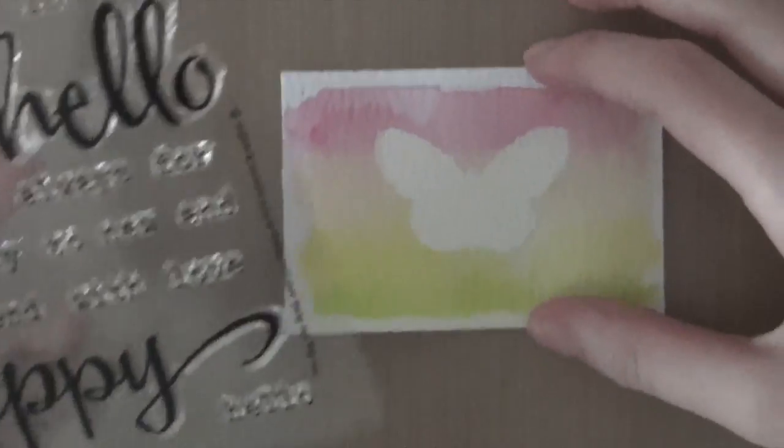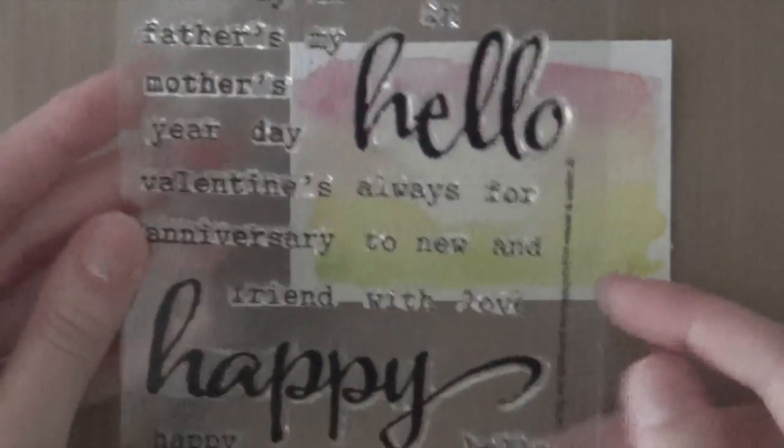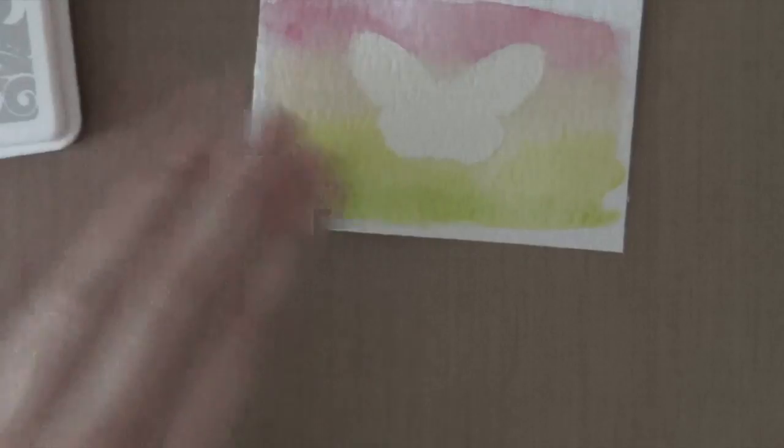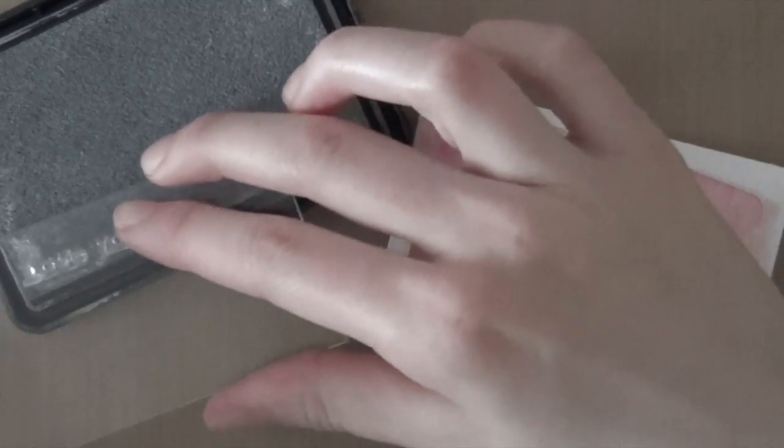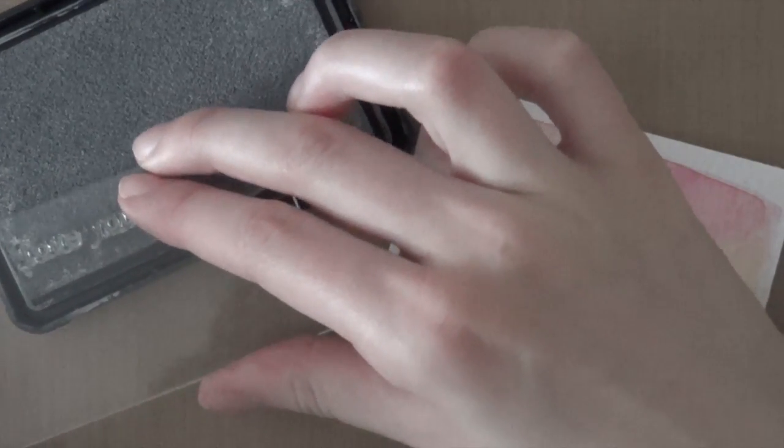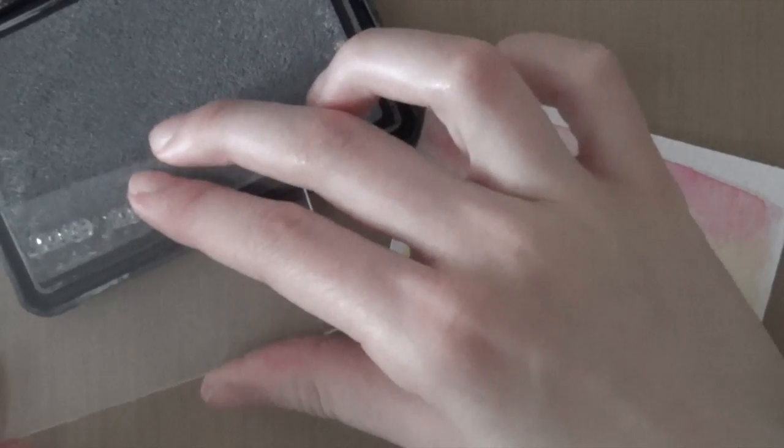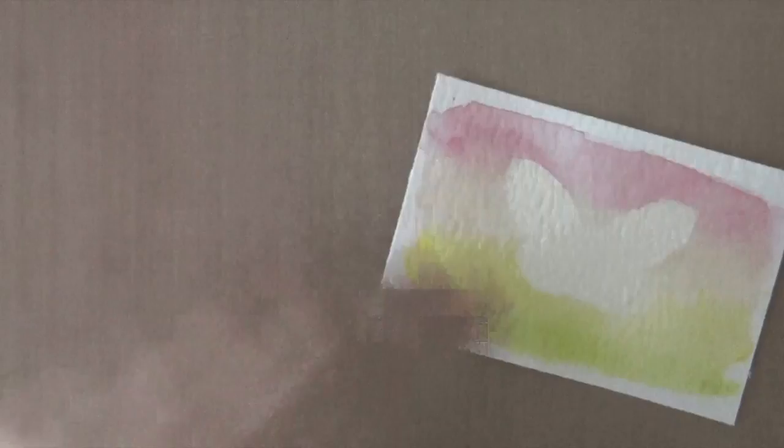And I'm going to use some Hero Arts silver shadow ink to stamp the sentiment. And there we go. I'm going to adhere the piece of watercolor paper onto my card. And I'm just using some dimensional adhesive.